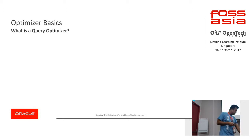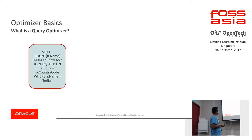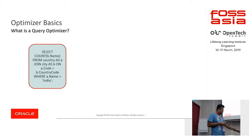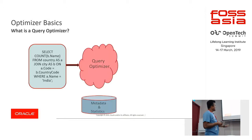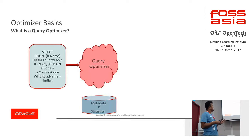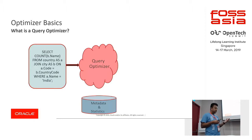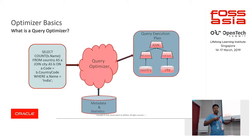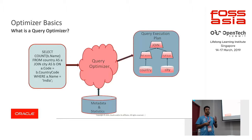Here is a small example. I have a query which joins two tables and finds out the count of the number of cities in India. For each of the tables involved in the query, the optimizer tries to collect the statistics and metadata of those tables. After getting those statistics, it generates query execution plans and chooses the best possible plan to execute the query.